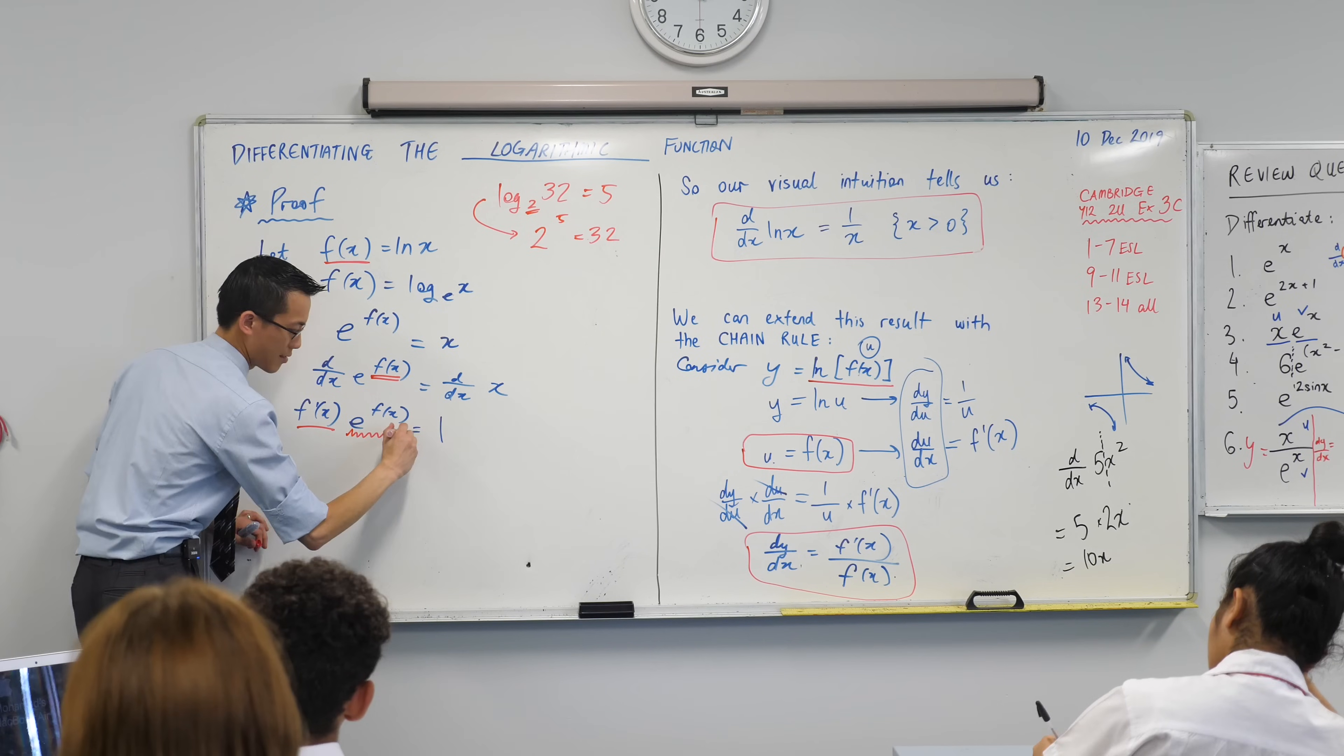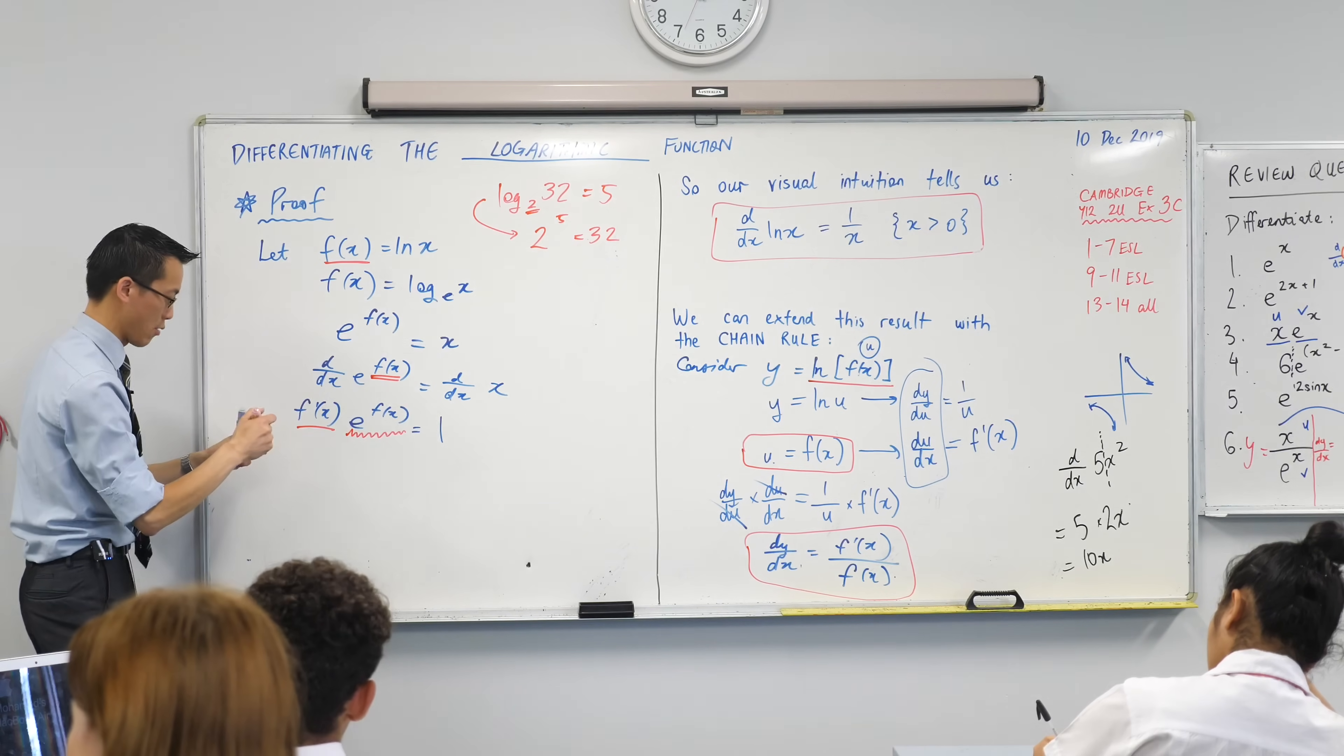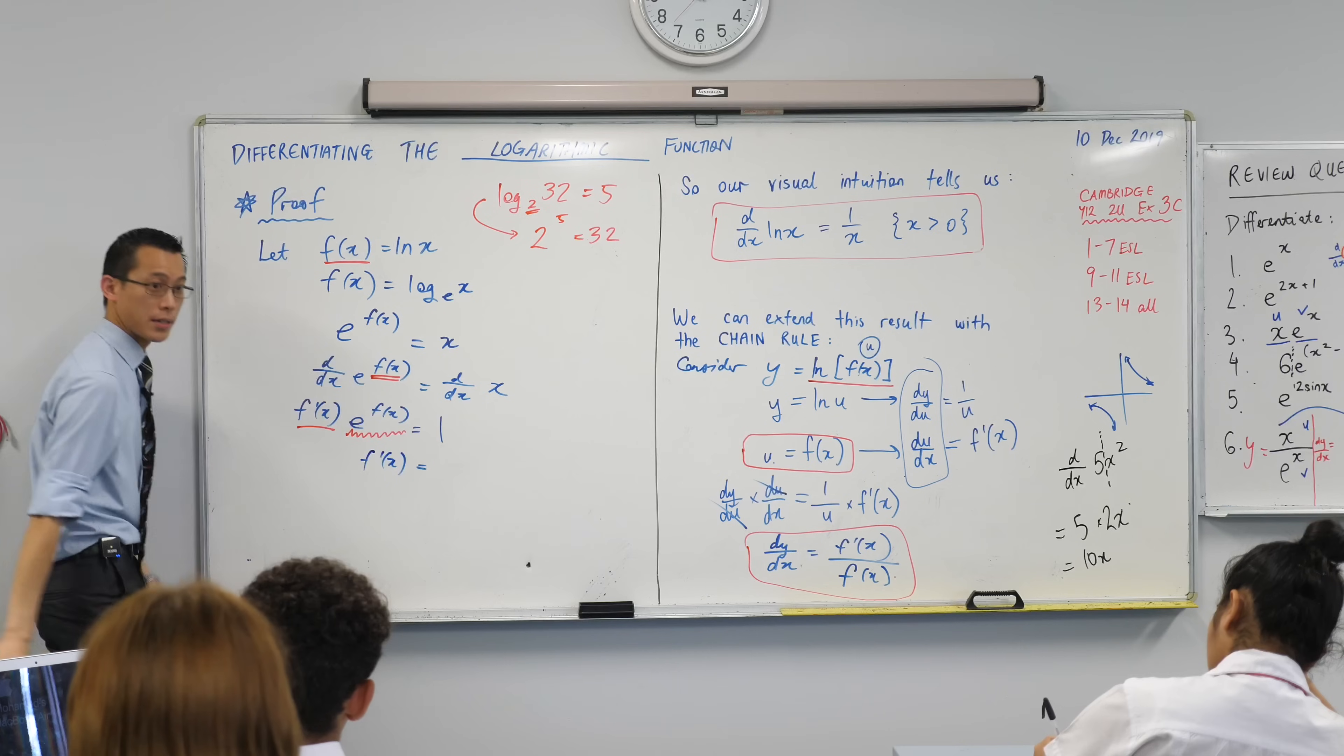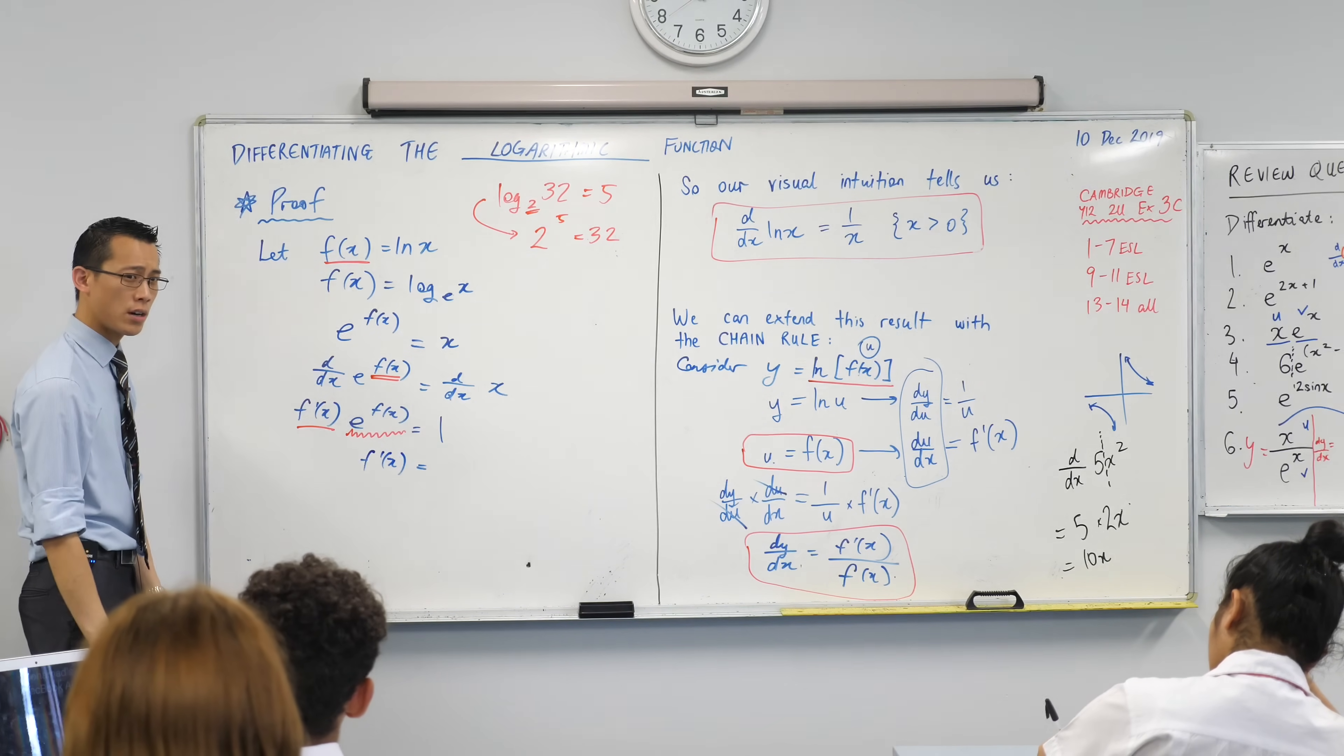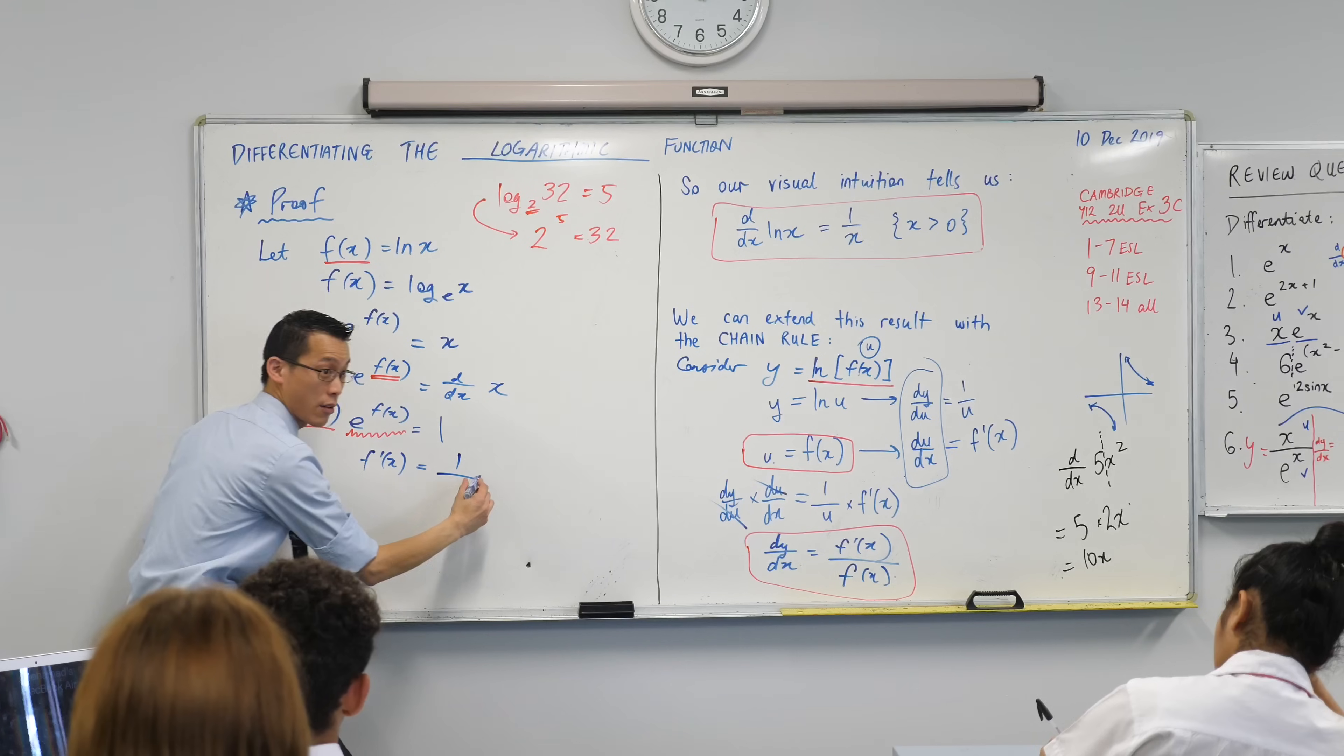Yeah, this thing here is like the thing in the way, so I'm going to just divide both sides by that. Which gives me f dash x on the left. What does it give me on the right? 1 over, 1 over this. Is that alright?